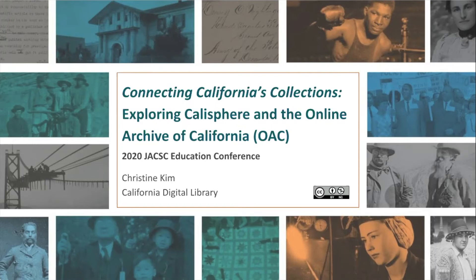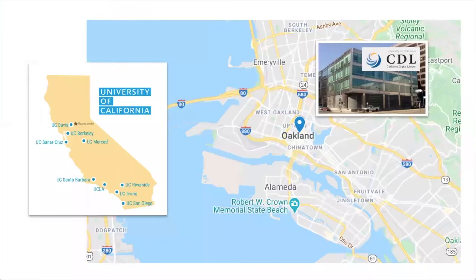Calisphere and the Online Archive of California are two free services that bring together primary source collections from throughout California. These services are supported by the California Digital Library to help researchers discover the unique collections stewarded by the libraries, archives, museums, and other cultural heritage organizations across our state. The California Digital Library is part of the University of California system.